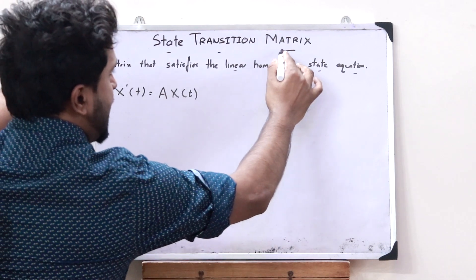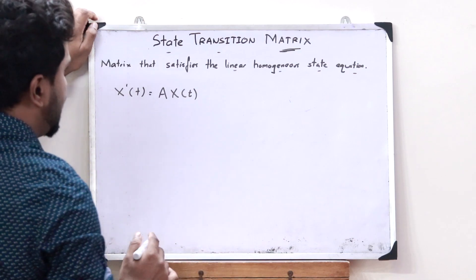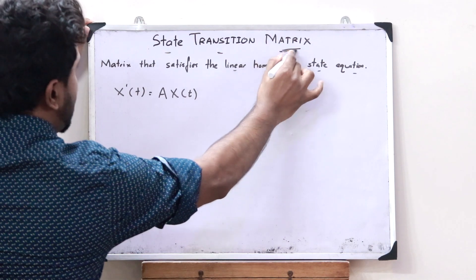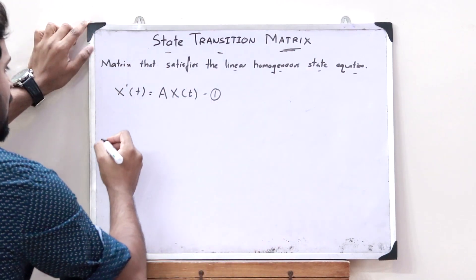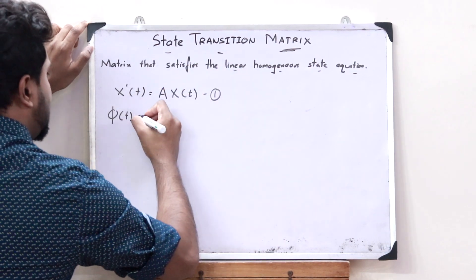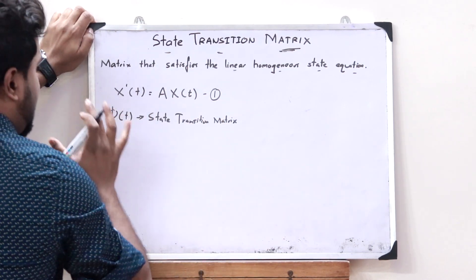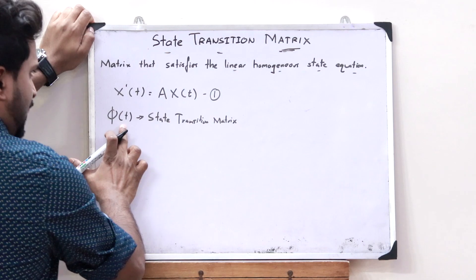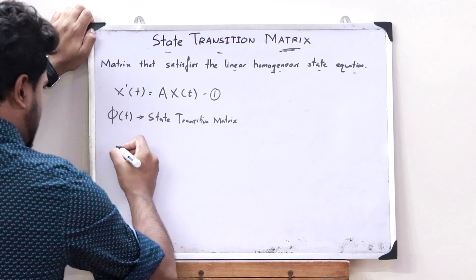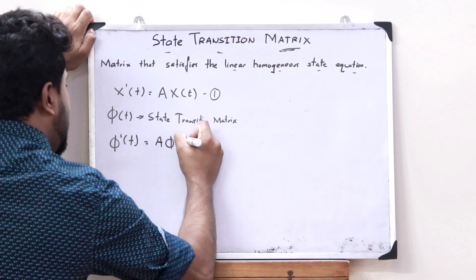A particular matrix that satisfies this linear homogeneous state equation is simply what you refer to as a state transition matrix. Let us take a particular matrix, say phi(t), as the state transition matrix. If phi(t) is a state transition matrix, then phi(t) must satisfy this particular equation — that is, substituting this over here, we must get phi'(t) = A·phi(t). Let this be taken as equation number 2.